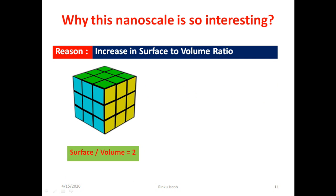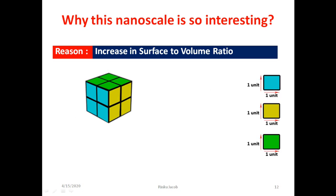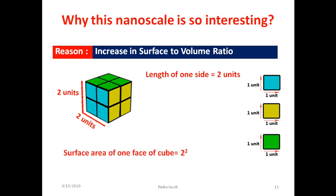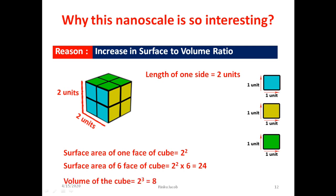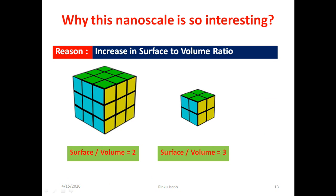Now we reduce the size of the large cube to get a cube with side 2 units. Surface area of one face = 2² = 4, total surface area = 4×6 = 24 unit square. Volume = 2³ = 8 unit cube. So surface to volume ratio = 24/8 = 3. As we reduce the size of the cube, the surface to volume ratio increases from 2 to 3.